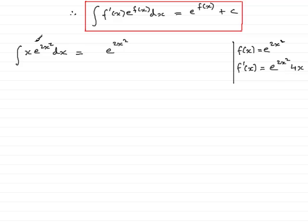We would essentially have 4x e to the 2x squared. Look how similar it is to that. Notice, though, there's no 4 at the front here.